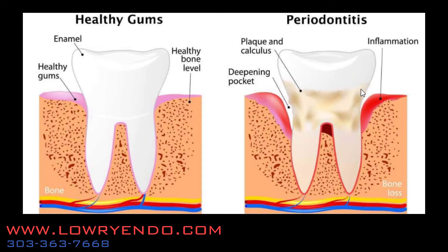If plaque, calculus, and bacteria get around the tooth, the gum tissue gets inflamed, and as that gum tissue gets inflamed it bleeds very easily. That inflammation causes bone loss around the tooth itself. Periodontists are specialists that are experts in managing this type of disease. They can clean the tooth and get the gum tissue to reduce its inflammation, and they can even graft bone back once it's been lost. Periodontists also can extract teeth and place dental implants to replace a tooth that can't be saved.